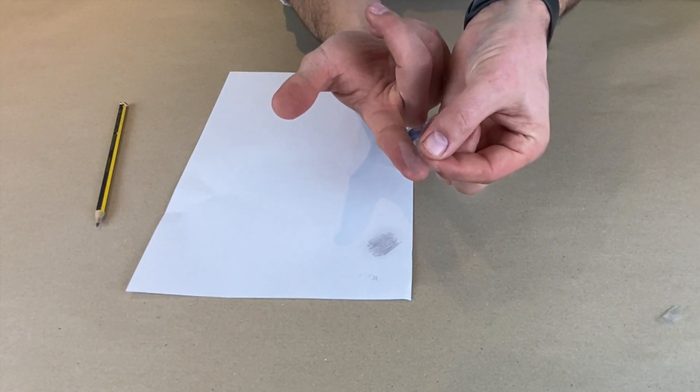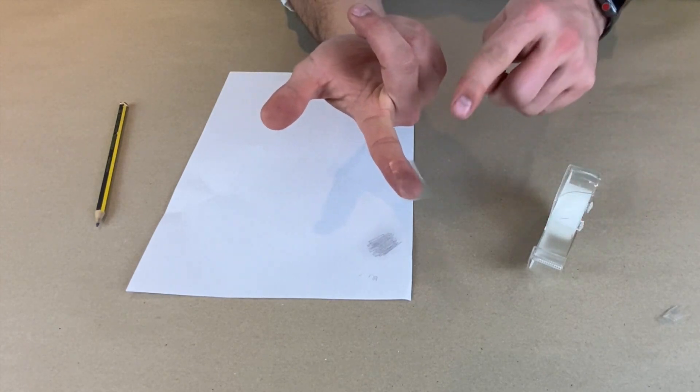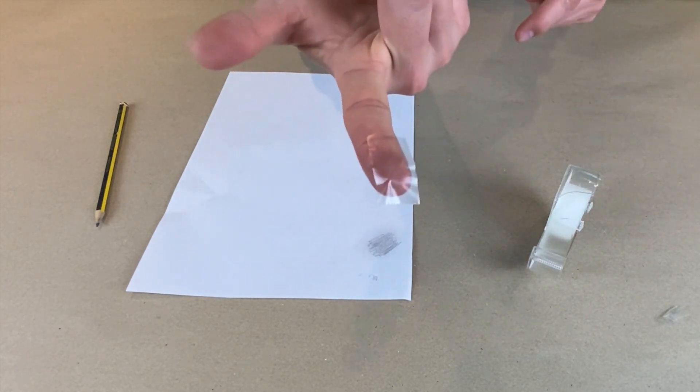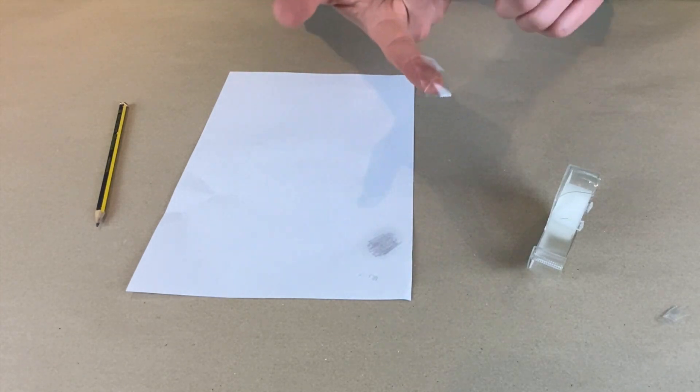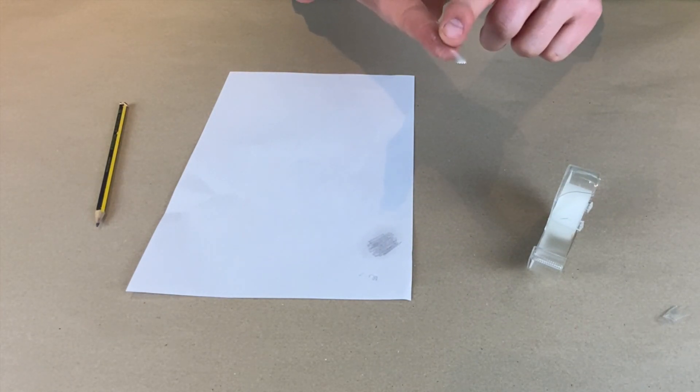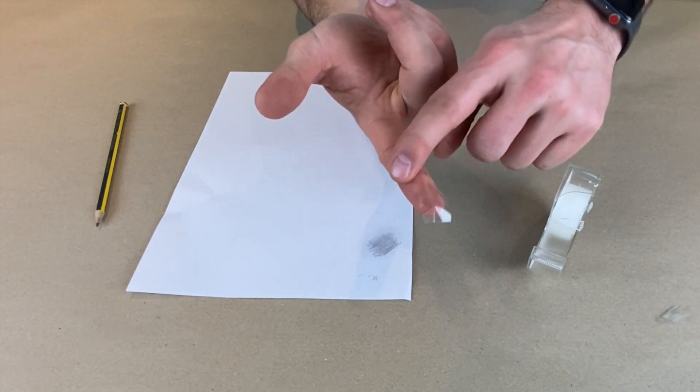And now I'm going to put the piece of sellotape onto my finger. And even through the sellotape you can hopefully see that it's kind of working a little bit. Squidge it on and hopefully it's going to stick to all of that dust. Just like this.